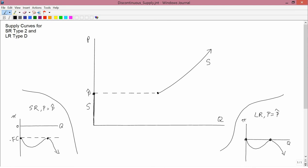You will have noticed, perhaps, that there are two cases, short run type 2 and long run type D, where the supply curve looks the way I've drawn it in the middle part of the screen. In other words, the supply curve has a gap.